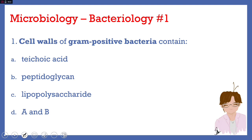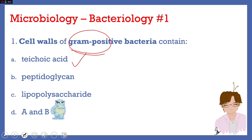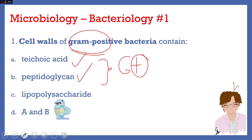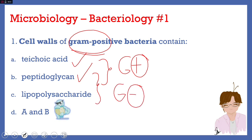Number one: cell walls of gram-positive bacteria contain A) teichoic acid, B) peptidoglycan, C) lipopolysaccharide, or D) A and B. The answer is D, A and B. One way we can differentiate bacteria is through their gram stain reaction. Gram-positive bacteria will have teichoic acid and peptidoglycan on their cell wall. So what will be found in the gram-negative bacterial cell wall? The answer is peptidoglycan and lipopolysaccharide.